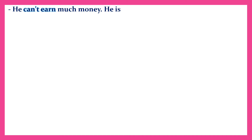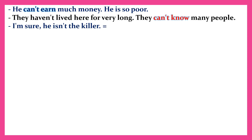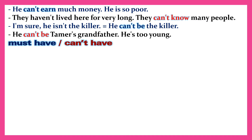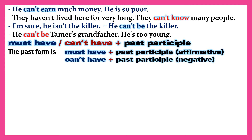He can't earn much money — he is so poor. They haven't lived here for very long, so they can't know many people. 'I'm sure he isn't the killer' equals 'he can't be the killer.' He can't be Tamar's grandfather — he's too young.